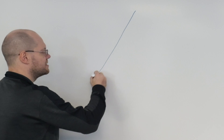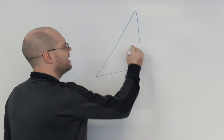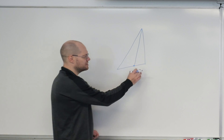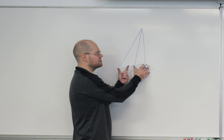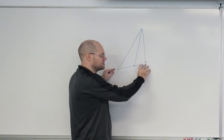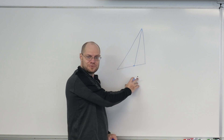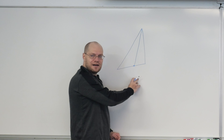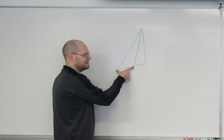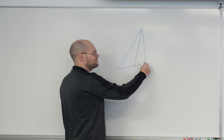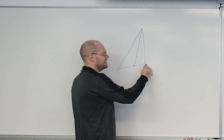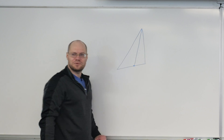Let's prove the bisector theorem. If you have a triangle and you bisect one of the angles, the bisector lands on the opposite side, dividing it into two segments whose lengths are in proportion to the corresponding sides. In other words, this segment over this segment equals the length of this side over the length of this side. That's what we need to prove.